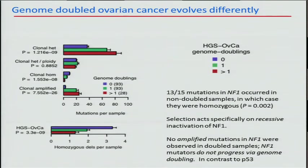Interestingly, of the 15 NF1 mutations seen in this set of 214 ovarian cancers, 13 occurred in the non-genome doubled set, and they were all homozygous. This suggests specific selection for recessive inactivation of NF1, as expected for a tumor suppressor. Furthermore, we didn't observe any amplified mutations in NF1 in the genome doubled samples, meaning NF1 mutation seems to commit you to the non-genome doubled trajectory of evolution in ovarian cancer — unlike P53, which can happen early and then become duplicated by genome doubling.